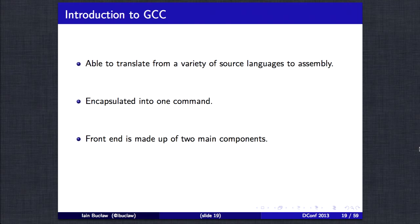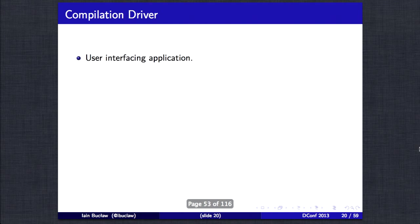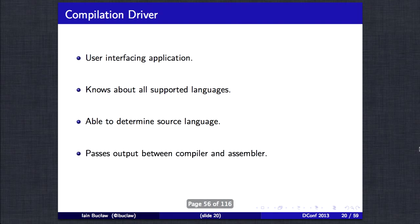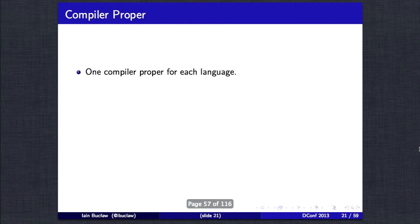Well, GCC is able to translate from a variety of source languages into assembly. And with one command sprinkled with declarations, it's able to go through this entire process. So, how does it do this? The frontend is made up of two components. There's a compiler driver and a compiler proper. The compilation driver is the user interfacing application. It knows all about the languages that GCC supports or was built for. And given a source file, it can determine which compiler proper it's actually for. So, if I pass a D suffix file to GCC, it'll say, this is a D source file. I'm going to pass it to the cc1d compiler.